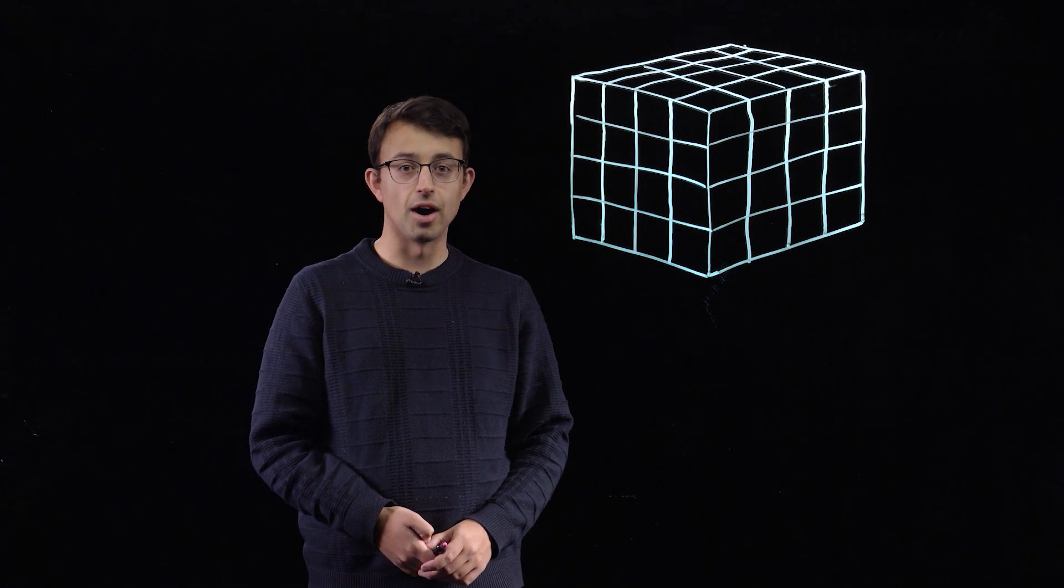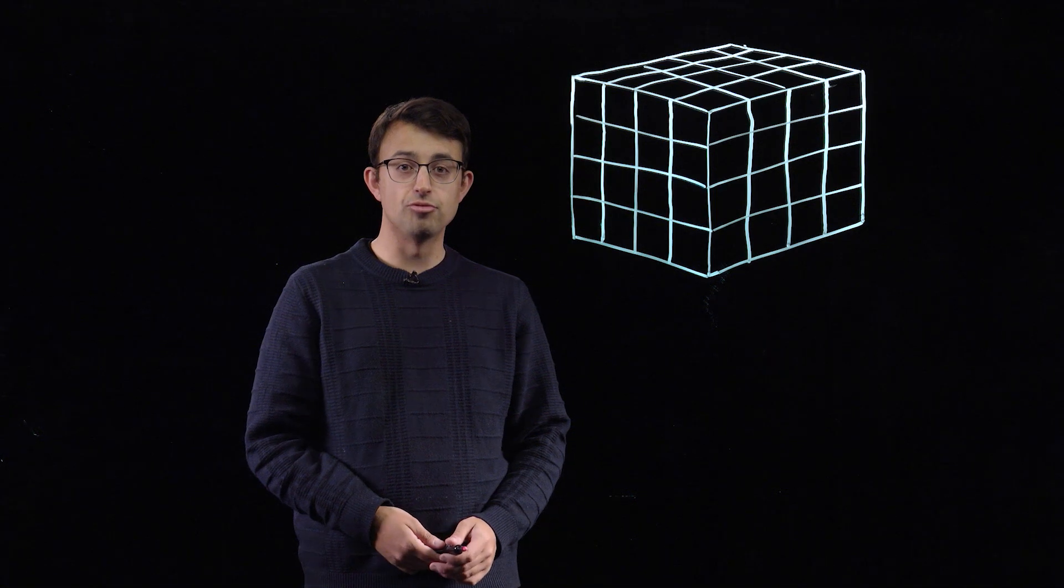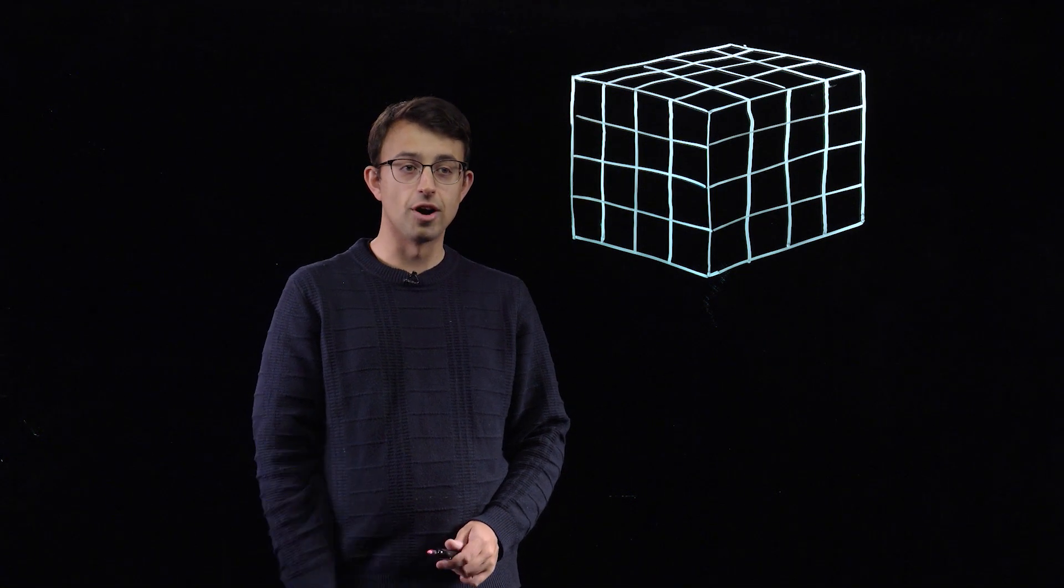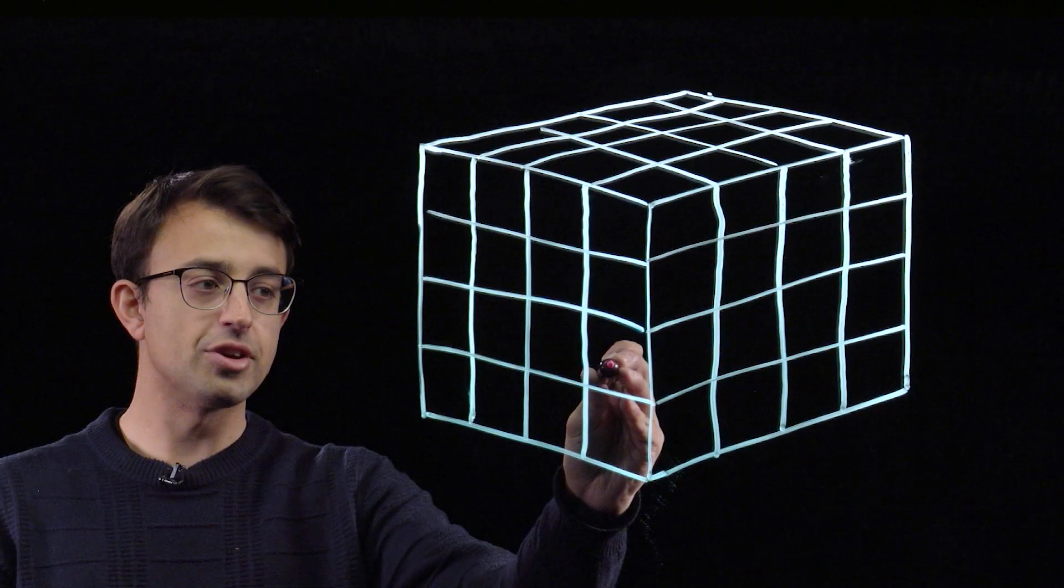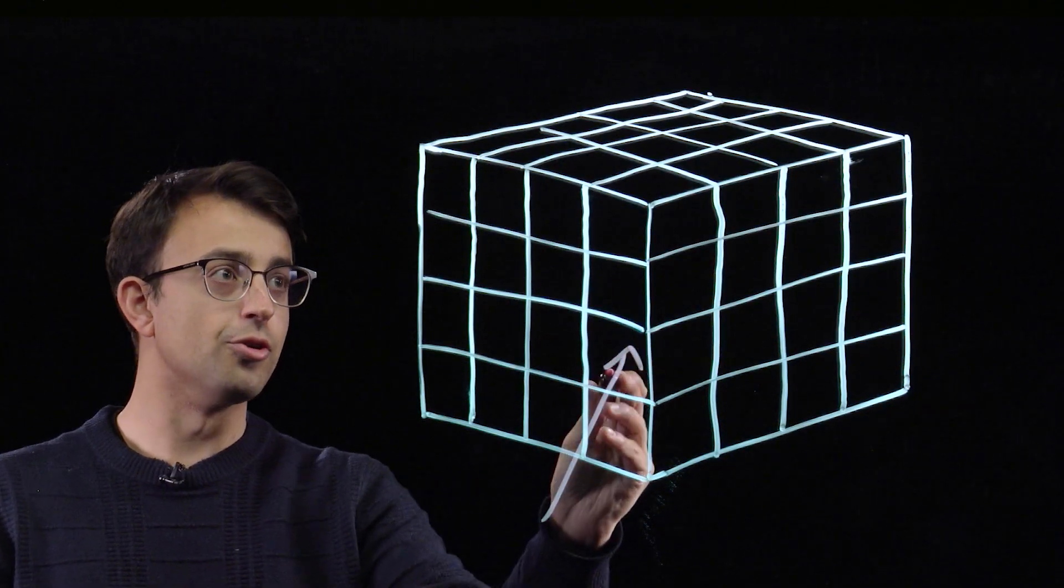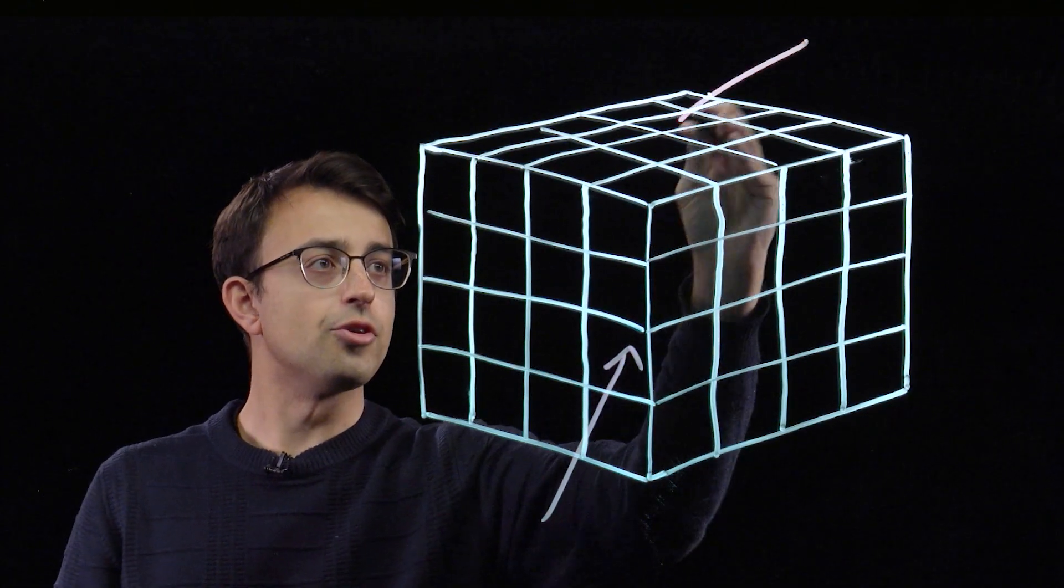Let's go to the opposite extreme now and think about distances that are relatively large, i.e. pairs of cubes are relatively far apart. Just as a concrete example, let's look at this cube and this cube.